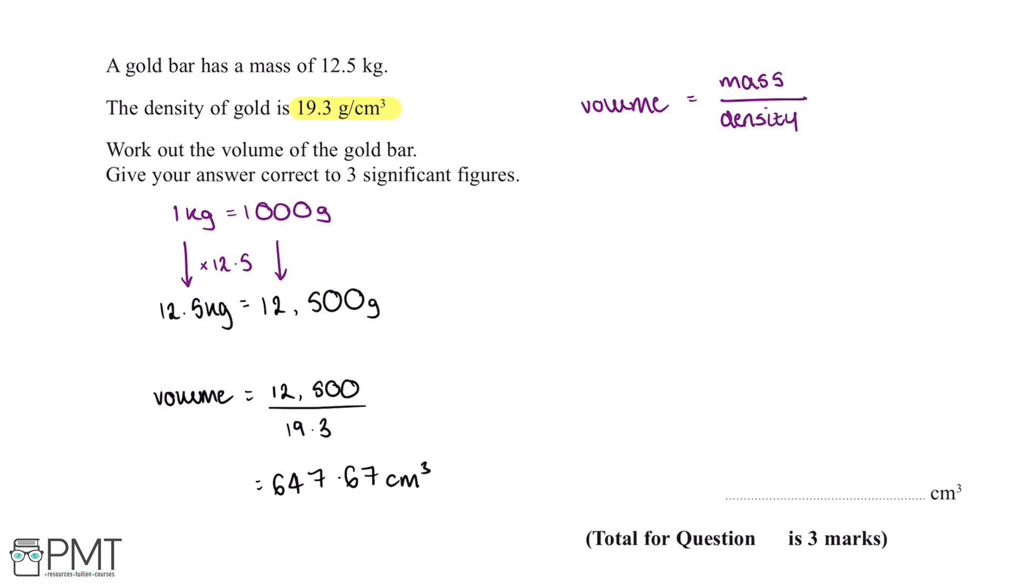The final thing we need to do for this question is give our answer correct to three significant figures. 647.67 to three significant figures gives us 648 centimeters cubed, and this is our final answer.